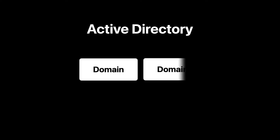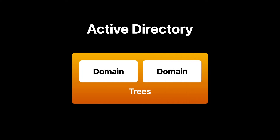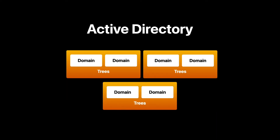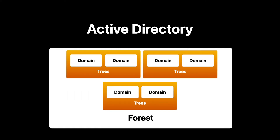The Active Directory structure is composed of three main tiers. Domains — many different objects that use the same database may be grouped into a single domain. Trees — this is a single group that is the combination of many different domains. And a Forest — which is the combination of multiple trees into a single group.